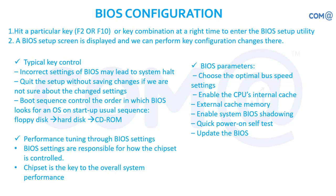The main BIOS parameters are: choose the optimal bus speed settings, enable the CPU internal cache — we can increase or decrease but only physically what is available. We cannot go for increasing much. Enable CPU's internal cache, external cache memory, enable system BIOS shadowing, quick power-on self-test, and update the BIOS. These are the normal parameters it performs.